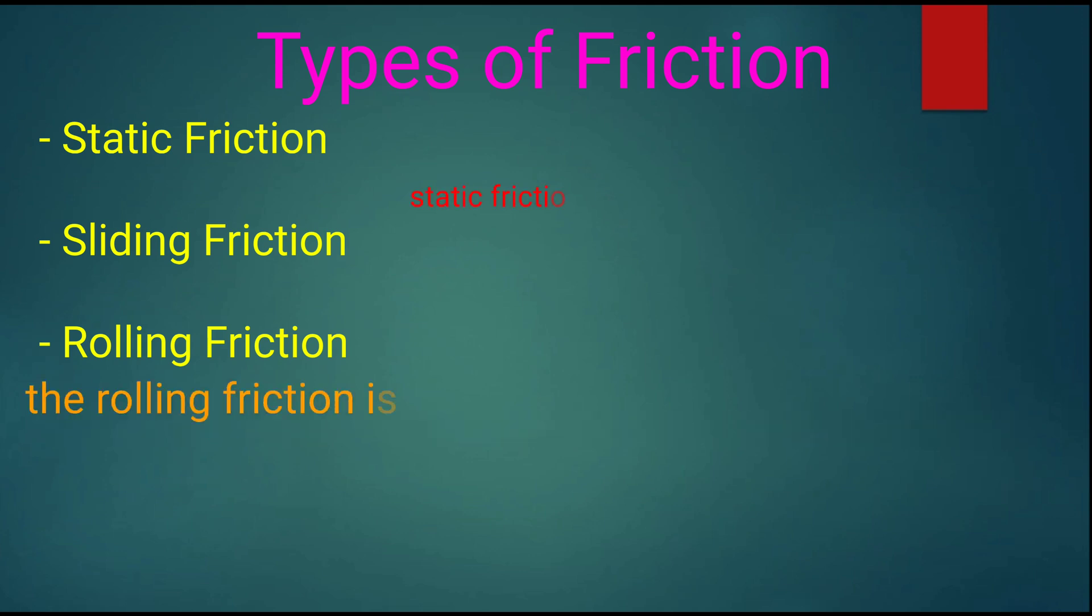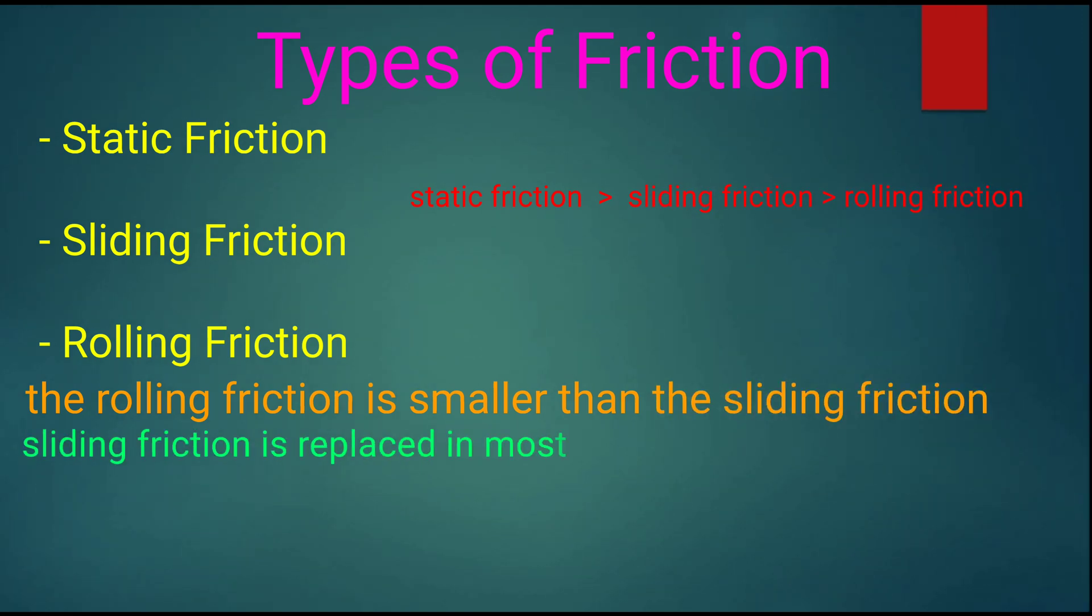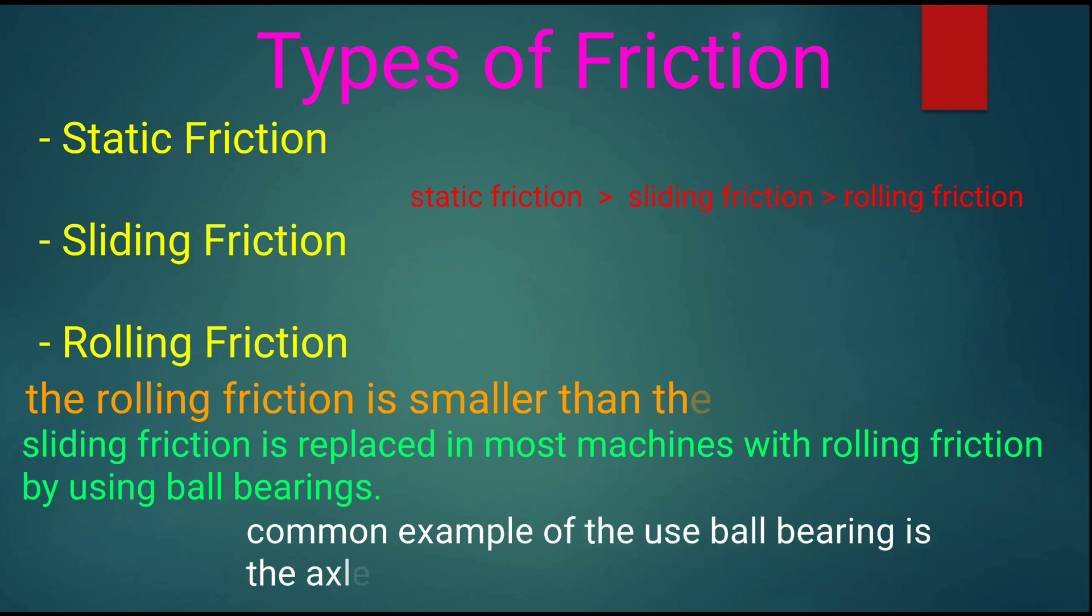Rolling friction is smaller than sliding friction. Sliding friction is replaced in most machines with rolling friction by using ball bearings. A very common example of the use of ball bearings is the axle of a bicycle.